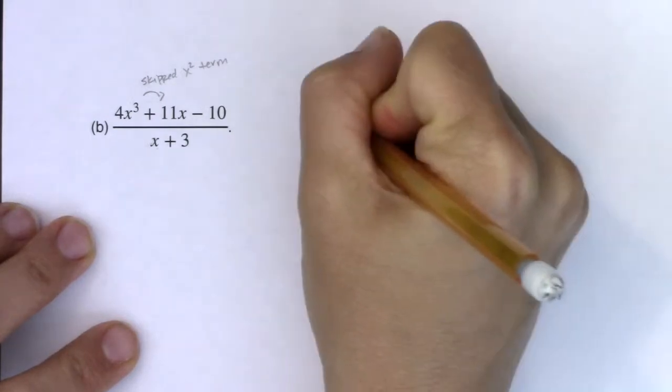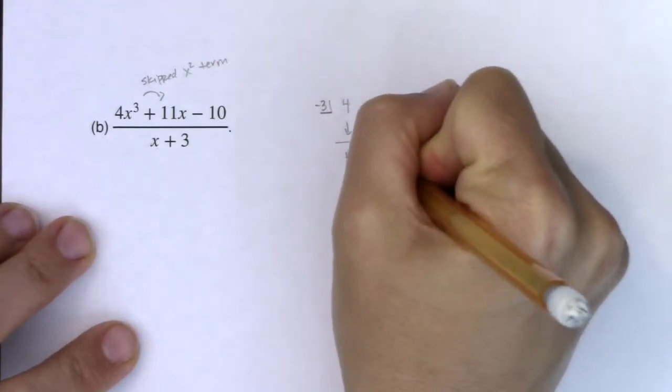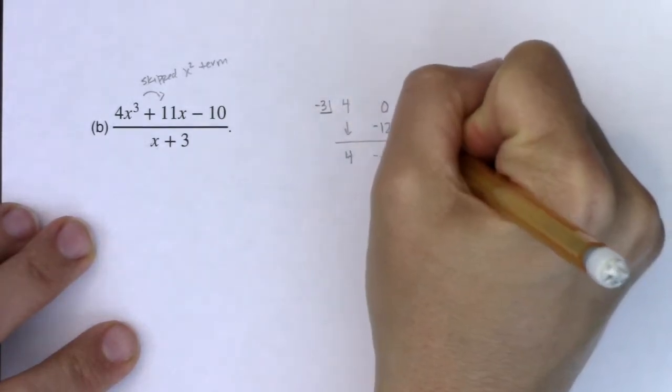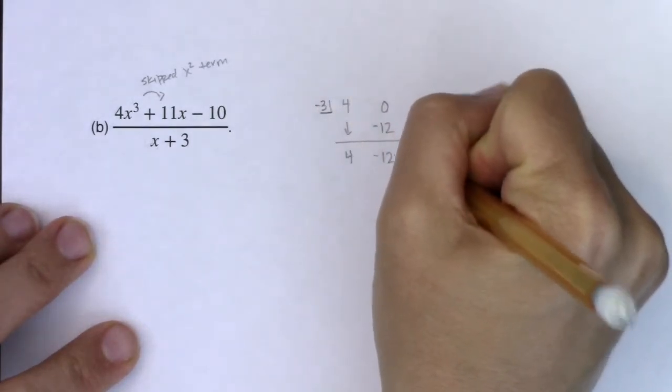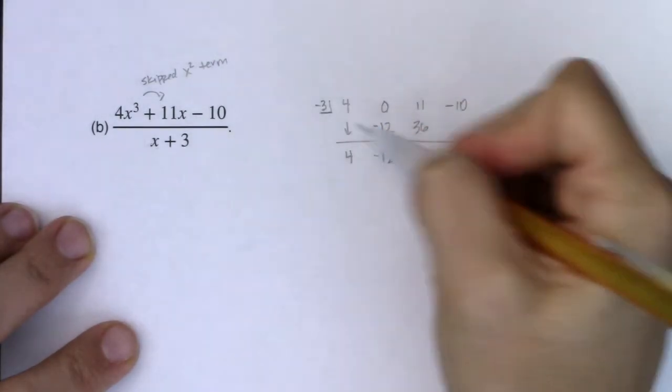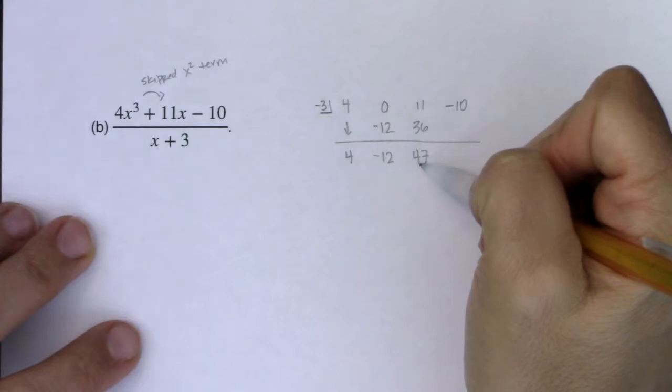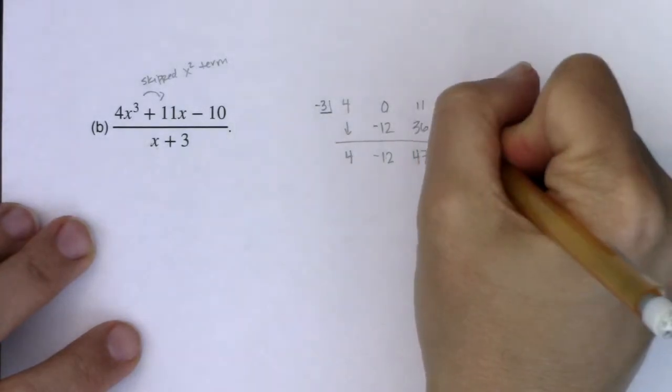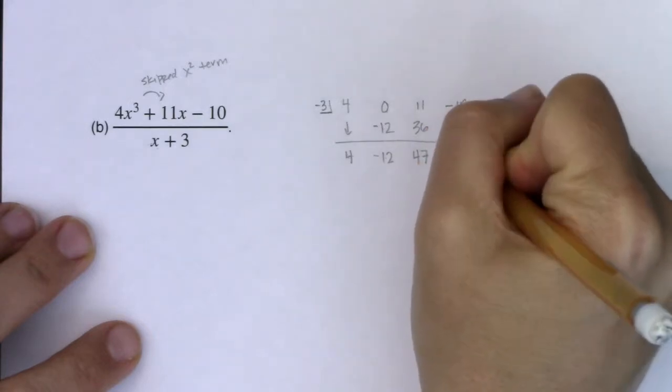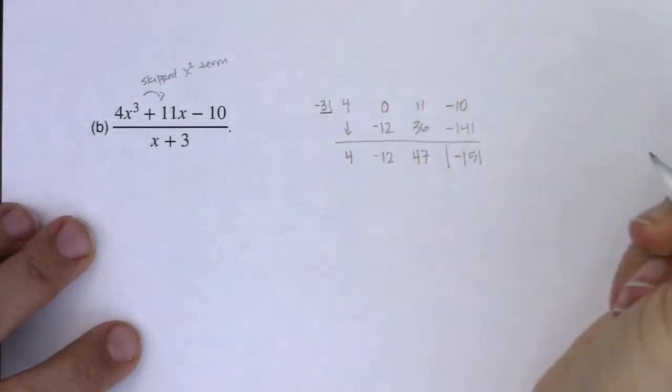So we'll go 4, negative 3 times 4, negative 12, 0 minus 12, negative 12, negative 3 times negative 12, 36. This will be 47. All right. Negative 3 times 47. Well, if I did negative 3 times 50, that would be 150 and I need to lose 9. So I think we're at negative 141. And then this would be negative 151.